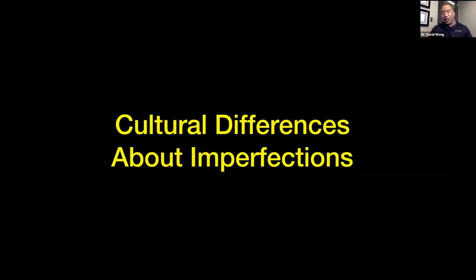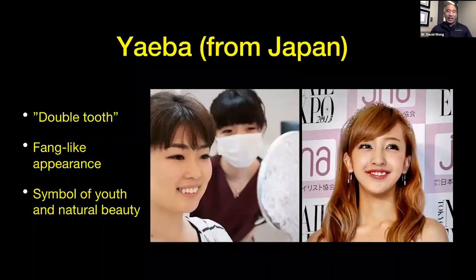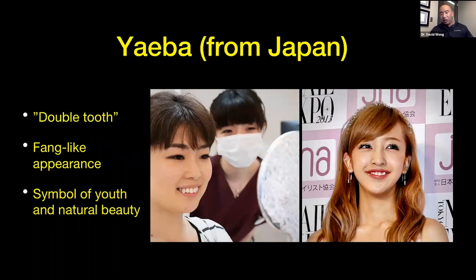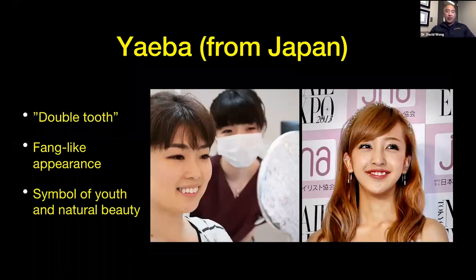Keep in mind our idea of beauty in America is going to be different than other countries and cultures. As an example, when we look at 'yaeba' from Japan — they call it the double tooth — that's where you have the fang-like appearance with a canine sticking out labially. That's a symbol of youth and natural beauty to them. Here in America, we would probably call it a snaggle tooth. So those are cultural differences we need to be aware of, because we're treating a variety of different people and we need to make sure we're on the same page with our patients.